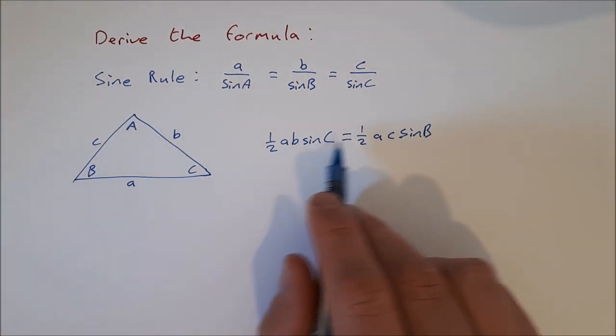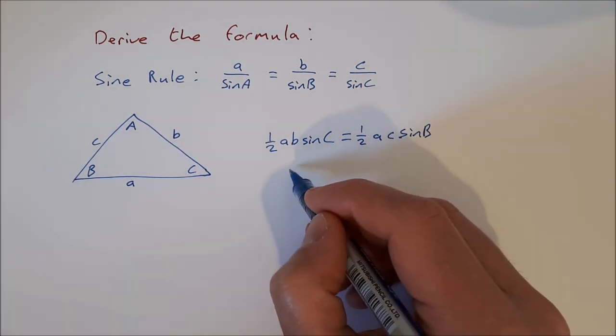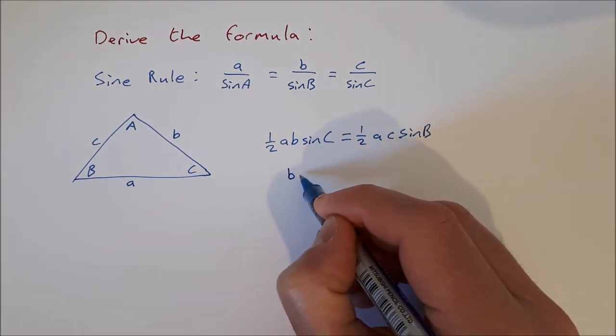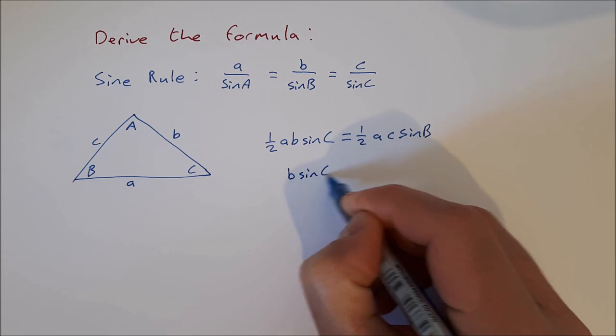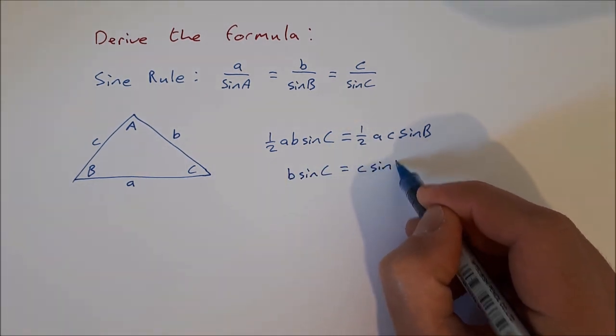We can multiply both sides by two, that'll get rid of the half, and then divide both sides by a to get rid of the a. So I can then say b sine C is equal to c sine B.